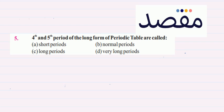I would say that the modern periodic table tells us that the 4th and 5th periods are called Long Periods. Why are they Long Periods?